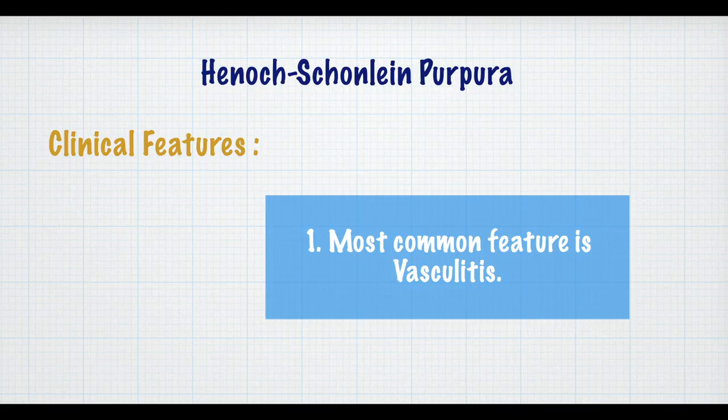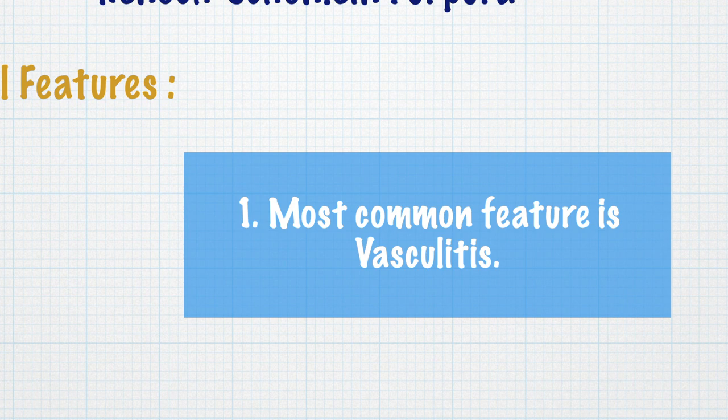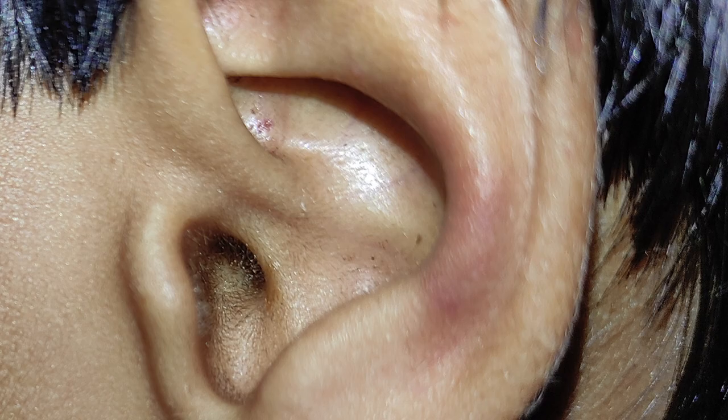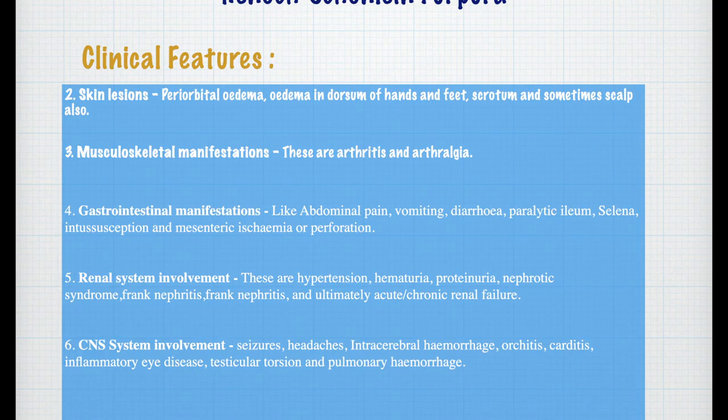Now we are going to discuss about the clinical features of Henoch-Schönlein purpura. The most common clinical feature is vasculitis — vasculitis in the ear blood vessels and vasculitis in the leg blood vessels.